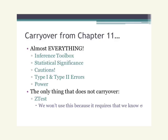The first thing I want to remind you is that we just learned about significance tests in Chapter 11, and pretty much everything we covered in Chapter 11 is going to carry over and apply here in Chapter 12. We're going to see the same steps in our inference toolbox, statistical significance, cautions, type 1 and type 2 errors and the consequences in context, power—all of that information from Chapter 11 will still apply.